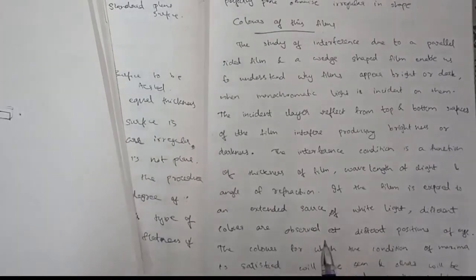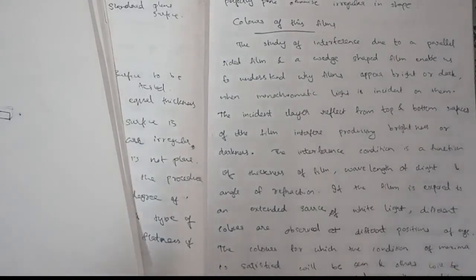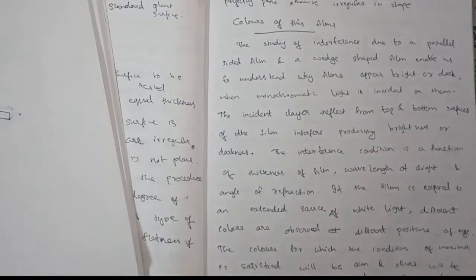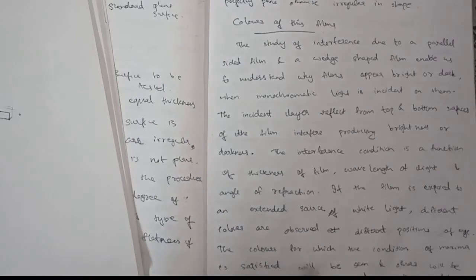Next is colors of thin films. The interference condition is a function of thickness of the film, wavelength of light, and angle of refraction. When white light is used, different colors can be observed. The colors for which the condition of maxima is satisfied will be seen and others will be absent.